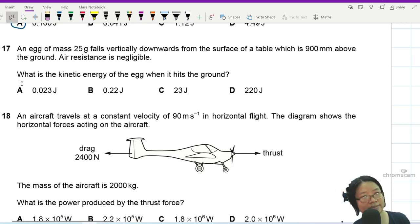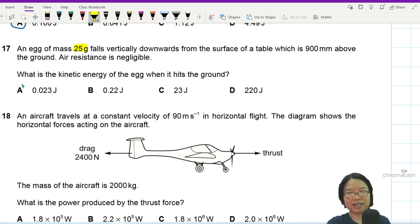Question 17. An egg of mass 25 gram falls vertically downwards from the surface of a table which is 900 mm above the ground. Air resistance is negligible.